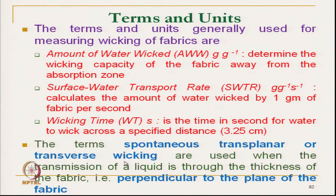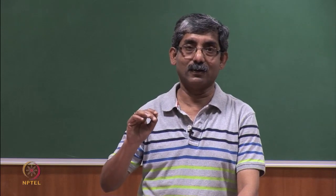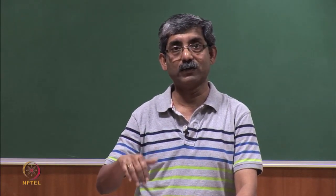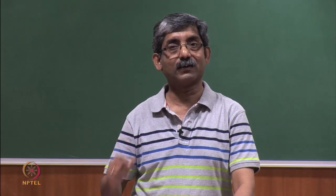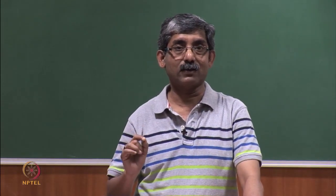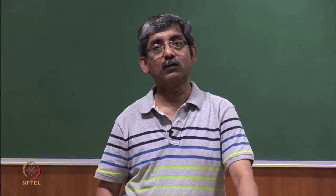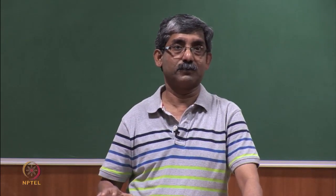The terms spontaneous transplanar or transverse wicking are used when liquid transmission is through the thickness of the fabric, perpendicular to its plane. There are basically three types of wicking: vertical wicking, which is against gravity where the liquid wicks vertically; in-plane wicking, which is along the plane; and transplanar wicking, which is across the thickness of the fabric. All three types are important.